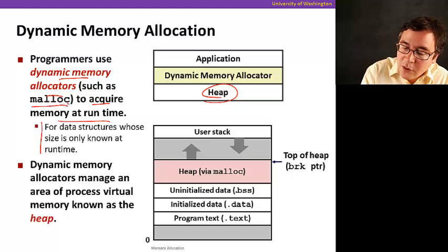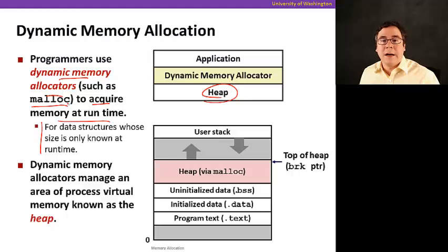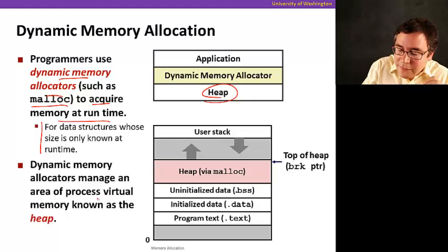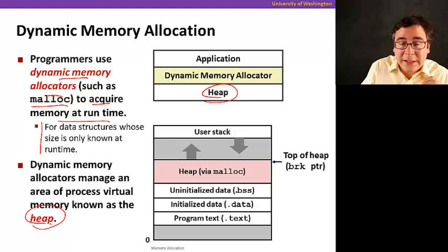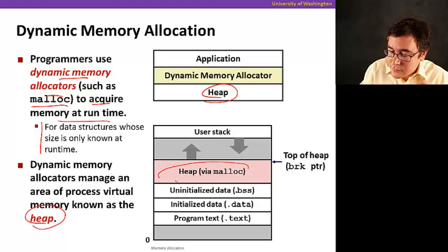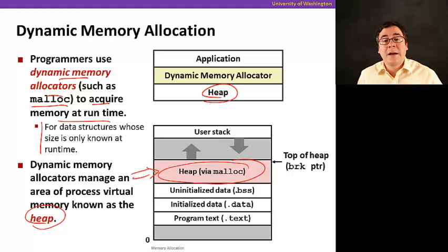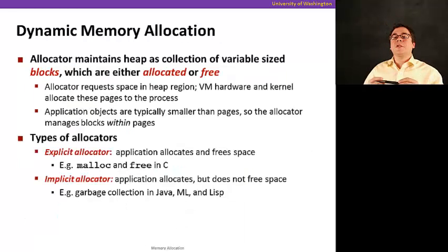And we're going to be using something called malloc as our dynamic memory allocator, which I'm sure you've seen. So the dynamic memory allocators, they manage this part of the address space, as I said, called the heap. There's a region here of your address space. That's where all of your regions of memory allocated with malloc go.